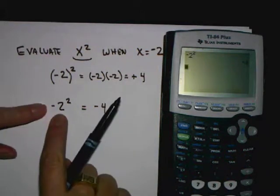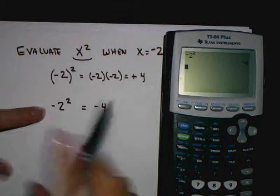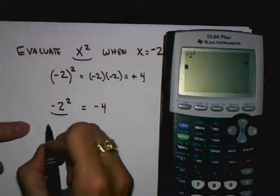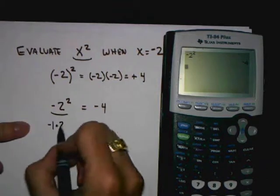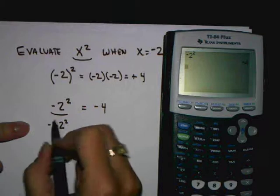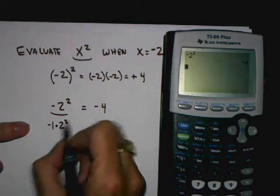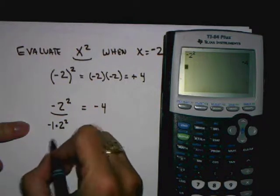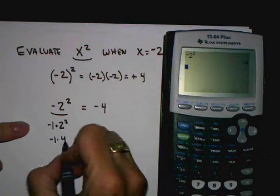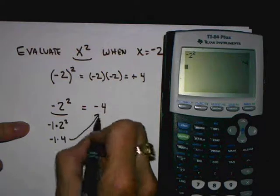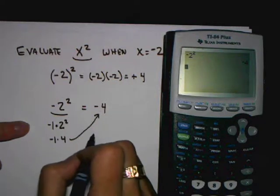Down here, the second problem, what I entered into the calculator, it's really, this is like saying negative 1 times 2 squared. And the squared part happens first, and it only squares the 2. So we end up with negative 1 times 4. That's where that negative 4 comes from.